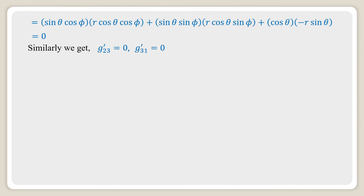Since g_ij is a symmetric tensor, g'₁₂ = g'₂₁, g'₂₃ = g'₃₂, and g'₃₁ = g'₁₃. So all off-diagonal components are zero.